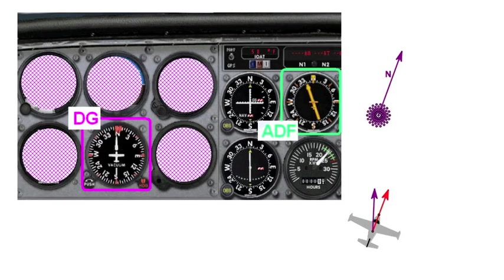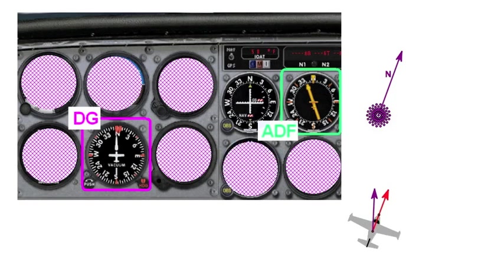DG is the one that we're going to need to interpret the ADF. Over here we've got the TAC engine instrument. This is actually the head for a VOR, we'll get VORs in the next lesson.